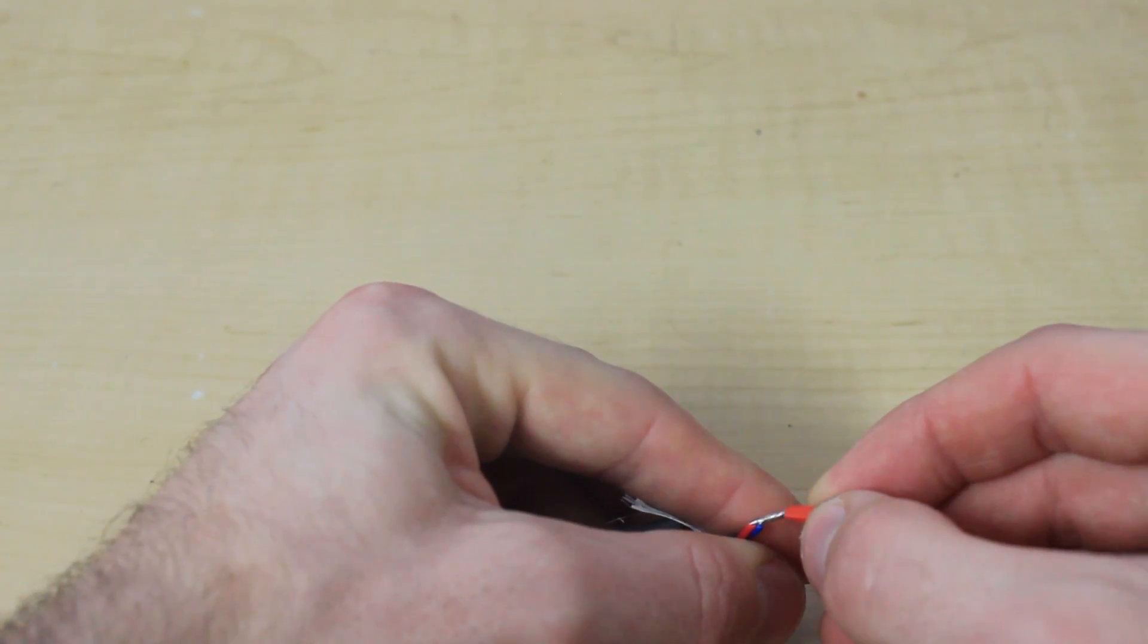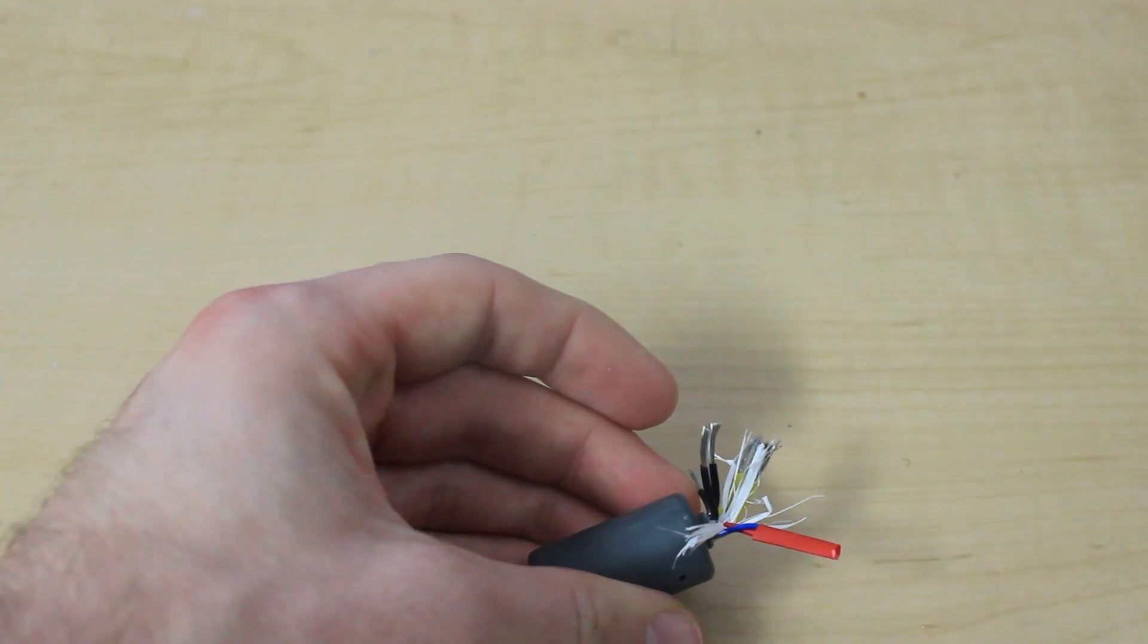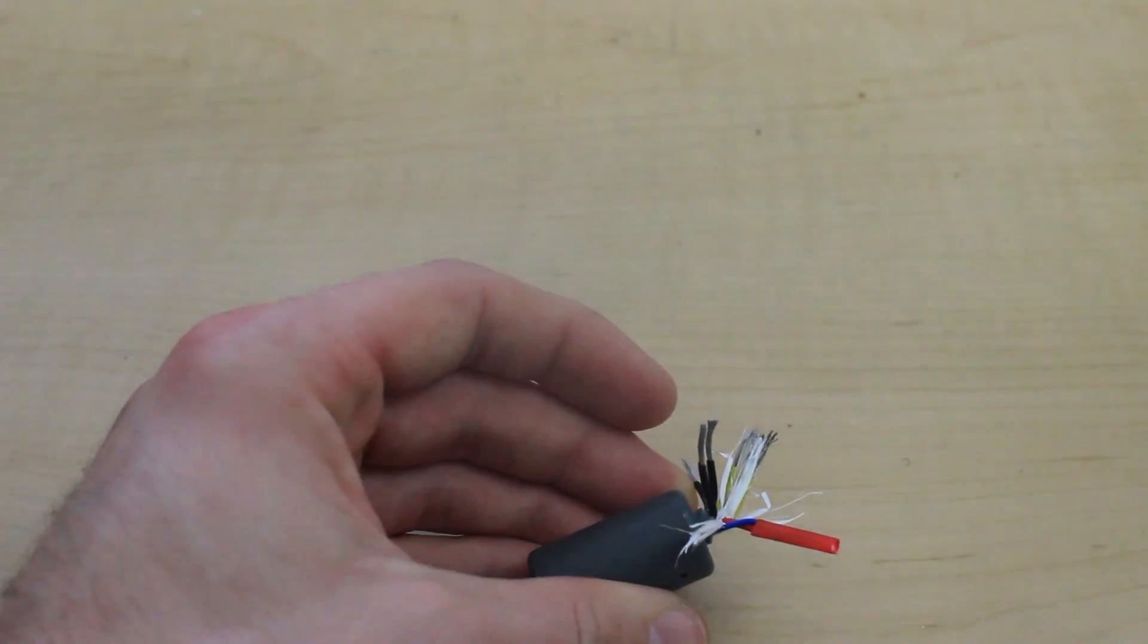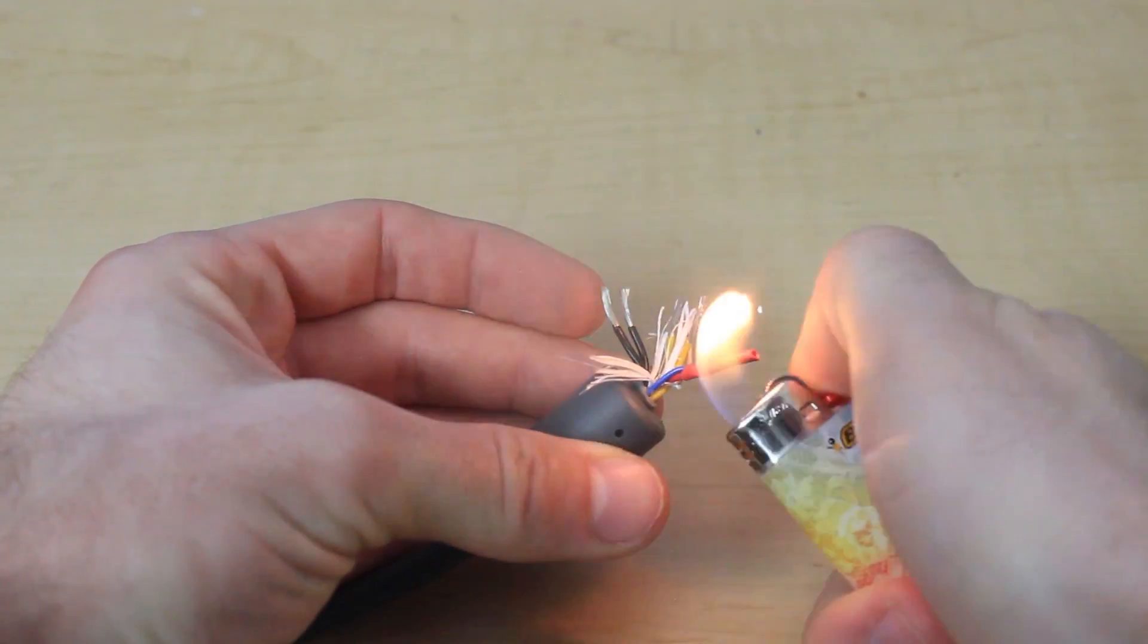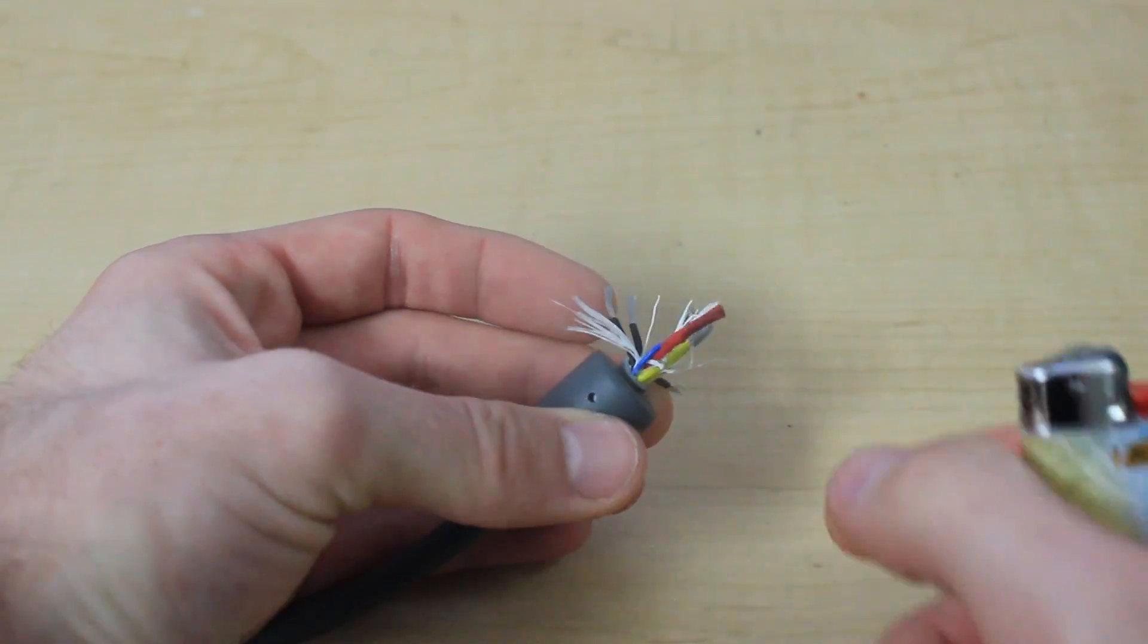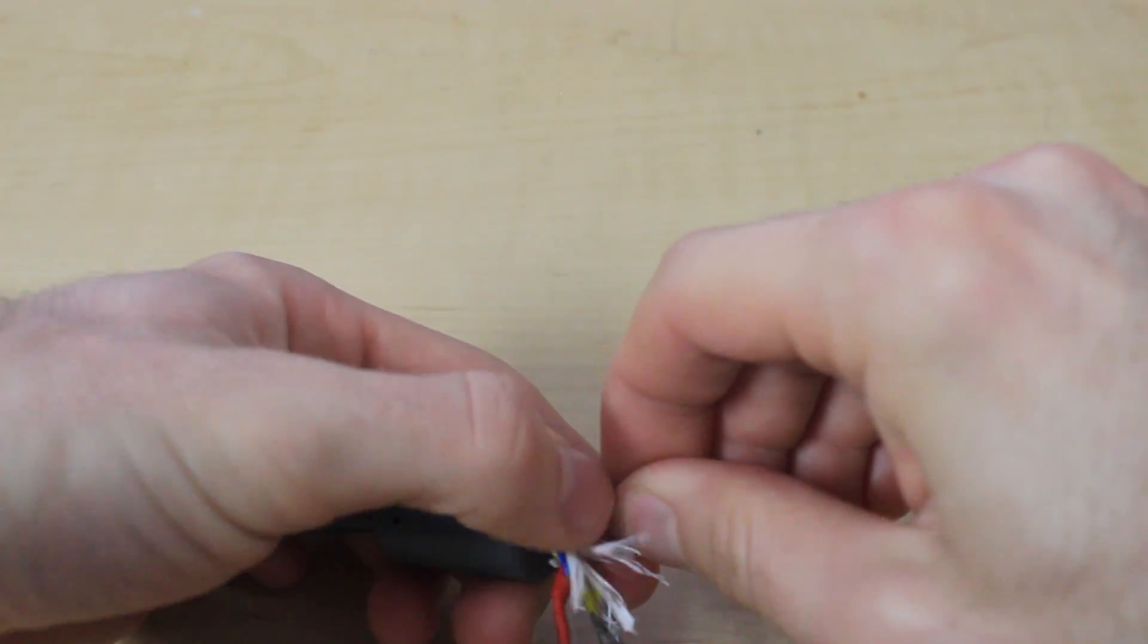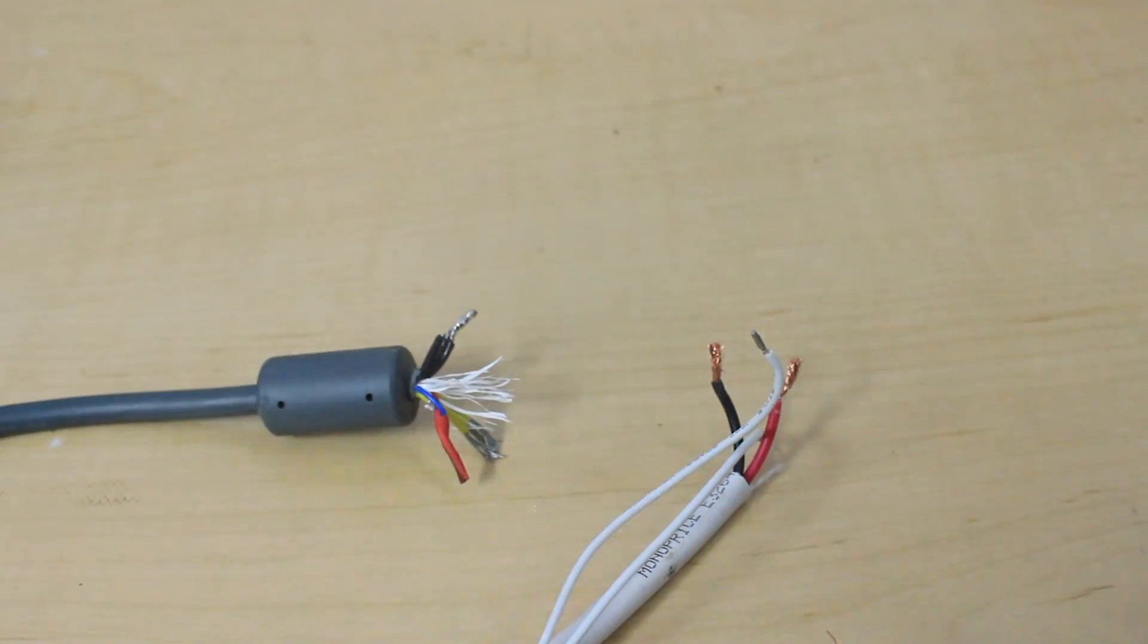So I just twisted them. I slid over a little bit of heat shrink tubing to cover the exposed wire and sealed it up. You could always put a switch or something like that in between these two if you want to be able to switch the power supply on and off without having to actually unplug it. It's your call. I might do that down the line. Then I just twisted together all of the black cables and all of the yellow cables and I soldered them to each other.